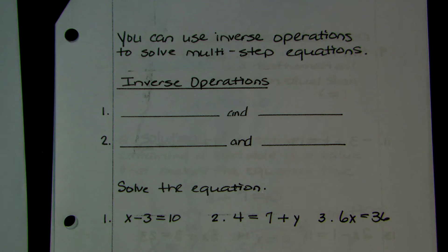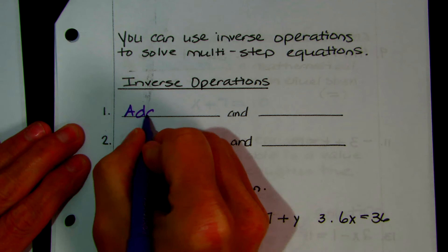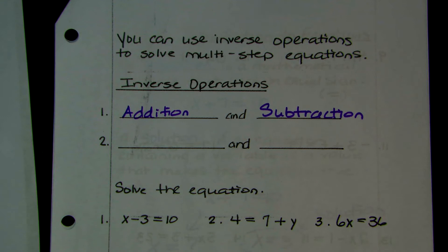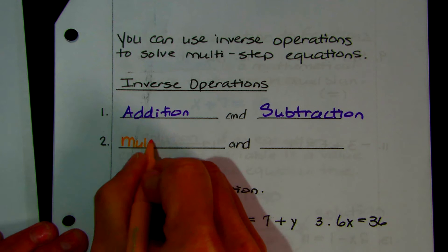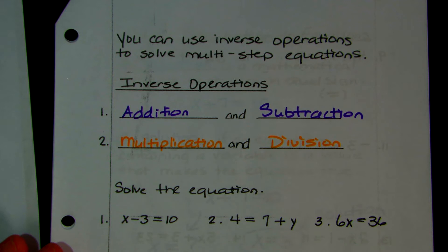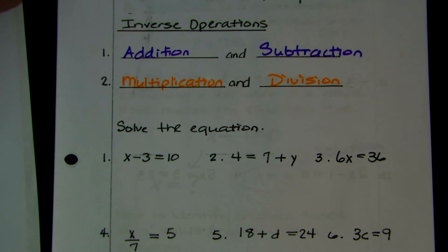It's inverse operations — you use those to solve your multi-step equations. What is an inverse? They're opposites. So what would be the inverse operation for addition? That would be subtraction. What would be the inverse operation for multiplication? That would be division. They're inverses — they undo each other. If you add something and subtract it, or multiply by something and then divide it, they undo each other.